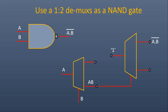For its implementation we need two 1×2 demultiplexers. As we saw in the previous question, we implemented A·B using one 1×2 demultiplexer — applying A at input I and B at the select line — giving A·B at the output of the first demultiplexer. Now we simply need to invert it. As shown in the first question, we apply A·B at the select line of the second demultiplexer and fix input I at logic 1. The y0 output of the second demultiplexer will then give A·B bar, which is the NAND gate output.